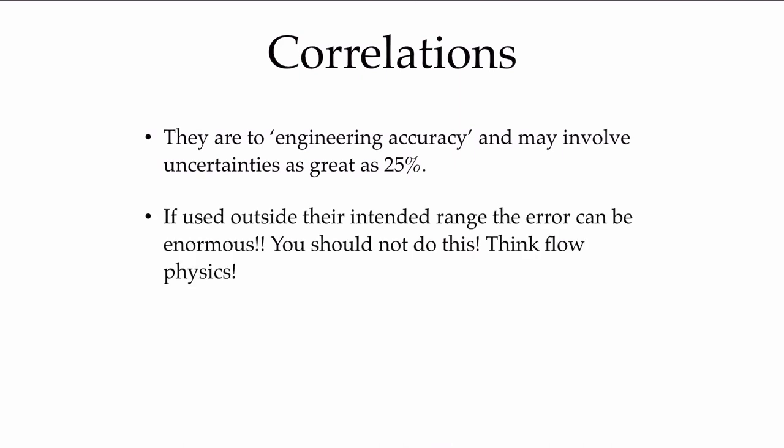If you use these correlations outside their intended range, the error can be much, much bigger than that. Perhaps there's another flow regime that has not been accounted for in coming up with a particular correlation. The heat transfer might be completely different, and so you should not use these correlations outside their intended range. You should keep searching to find one that is within the intended range, that has considered data for the flow conditions that you are speaking of.